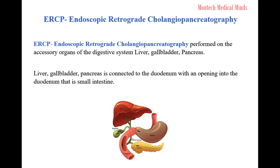CPT Coding of ERCP — Endoscopic Retrograde Cholangiopancreatography. ERCP is performed on the accessory organs of the digestive system: liver, gallbladder, and pancreas.